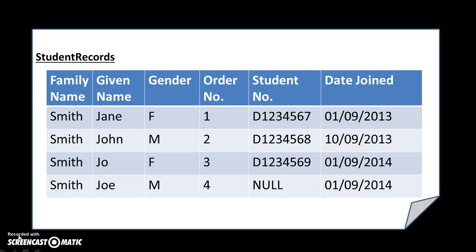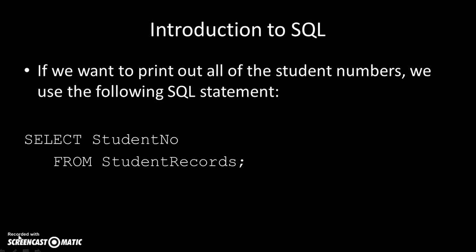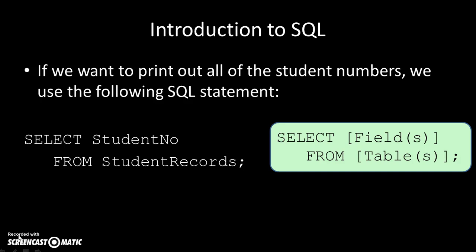Let's think about our table again: family name, given name, gender, order number, student number, and date joined. If I wanted to get a list of all the student numbers in that table, I would use the following SQL statement: SELECT student_number FROM student_records. Student records is the name of the table. That selects the field 'student number' and prints out all of its values. The general format is: SELECT fields FROM table or tables.